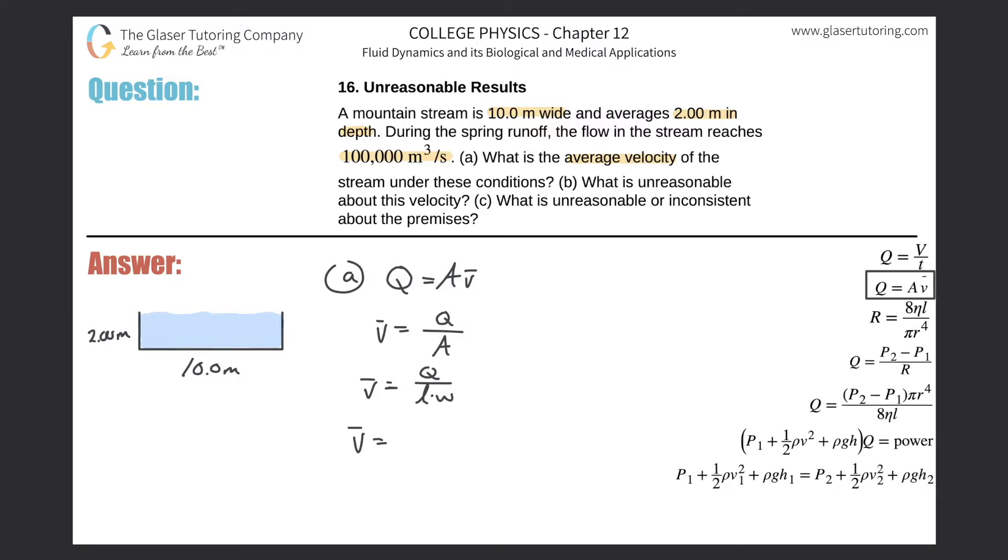So Q they told us was 100,000, and the length times width is now 10 multiplied by 2. I'm not plugging in the sig figs there, I'll try to take it into account at the end. So this is 100,000 divided by 20 essentially, and we get 5,000.